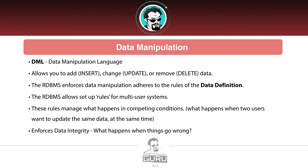What happens if something goes wrong? Enforcing data integrity covers system errors and actions outside the rules — these are rule sets for when things go wrong. That's another function of the database management system, and it's very complex. Data manipulation is more than just inserts, updates, and deletes — it involves a very active system with many users and the interactions between them. It's a paradigm shift to realize the database is up and running with many people working on it at the same time.